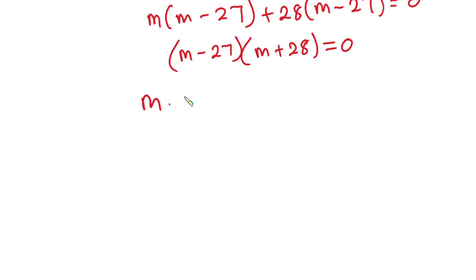Now from here, it is either m minus 27 is equal to zero, or m plus 28 is equal to zero. Let's go ahead and make m the subject in each case.